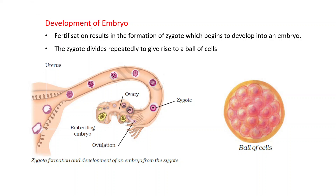Now let's discuss the development of the embryo. Fertilization results in the formation of a zygote, which begins to develop into an embryo. The zygote divides repeatedly to give rise to a ball of cells. Fertilization occurs in the fallopian tube, where the zygote forms, and the cells divide, converting into a ball of cells.